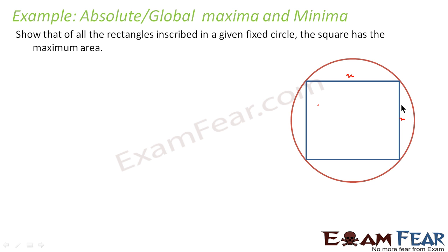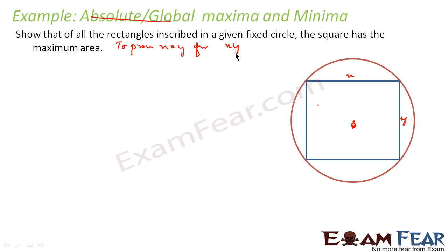Is this a question of absolute maximum/minimum? No, because the range and domain are not defined. Let's take the radius as r, and center at (0,0). How should we proceed? We have to prove that if my sides are x and y, then x is equal to y for area to be maximum.